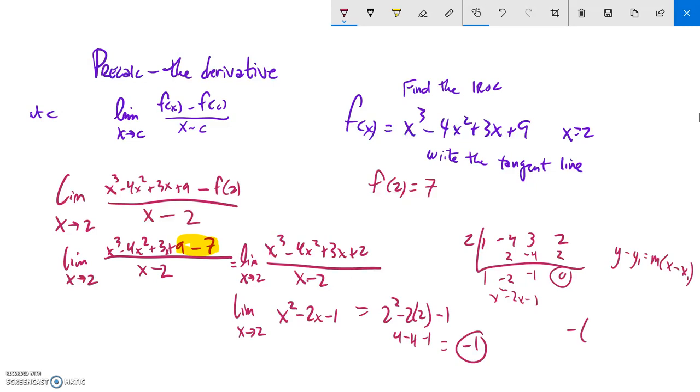So I know the slope—the slope is the derivative—so that's negative 1. x minus the x part of the point, that's 2. And y minus the y part of the point, that's 7. There it is. All right, I hope that was helpful.